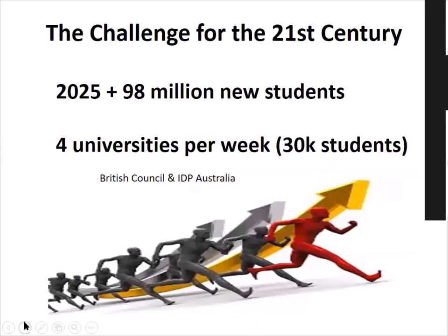This is part of what I believe is the challenge for the 21st century. It's estimated that by 2025 there'll be almost 100 million new students capable of post-secondary education who won't be able to access it. John Daniel in 2015 told us we'd have to build four new universities a week of 30,000 students to meet this demand — and we know that's impossible. We have to look at new ways for mass learning.